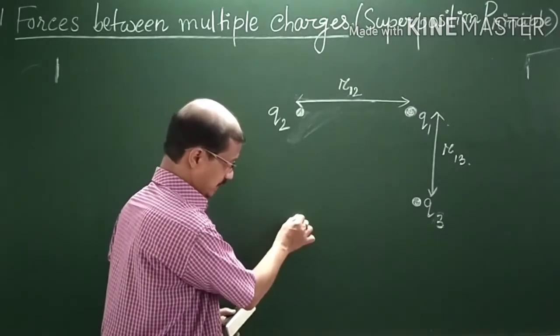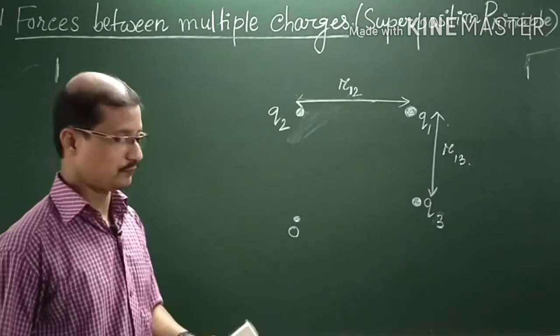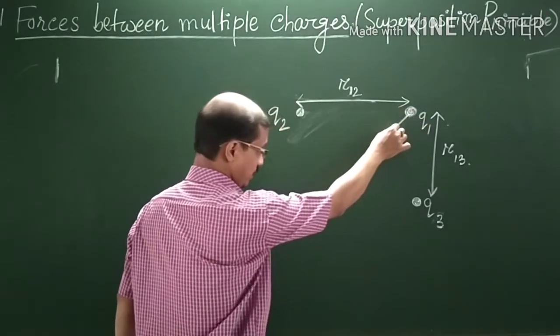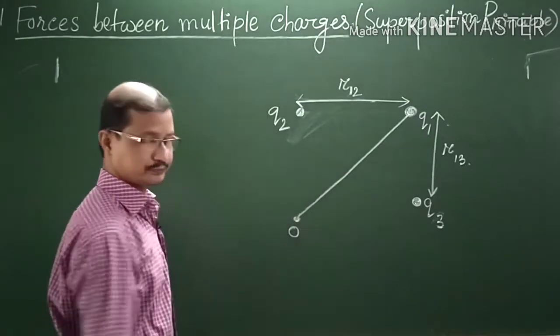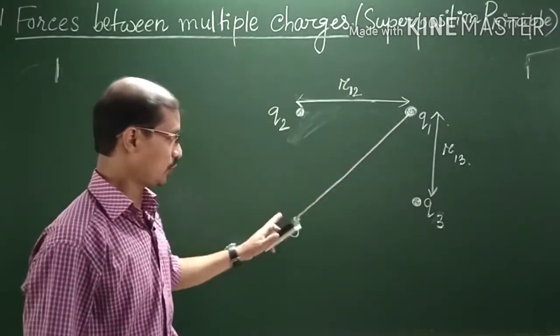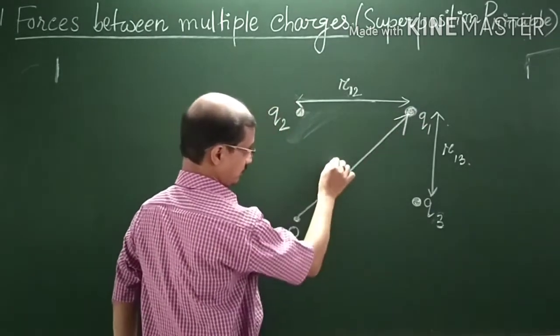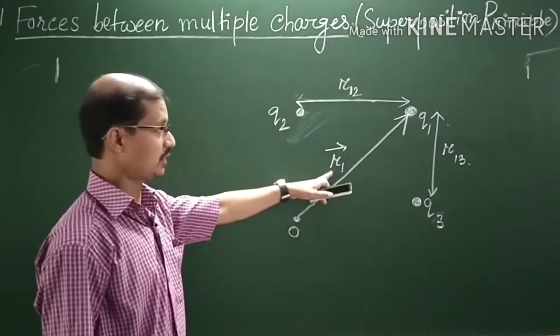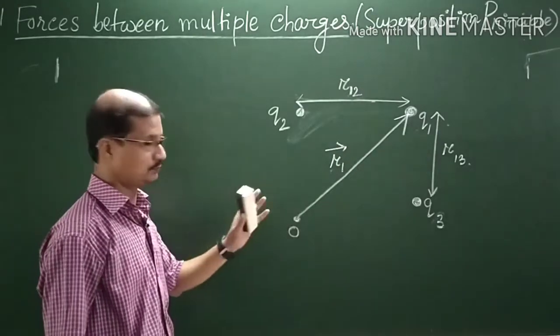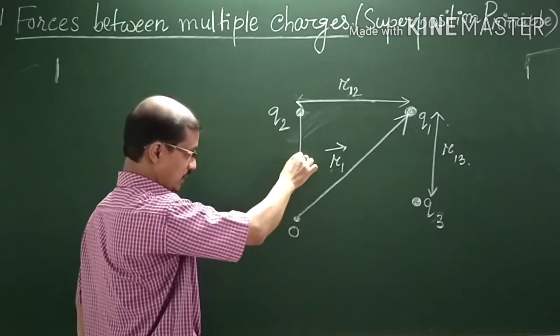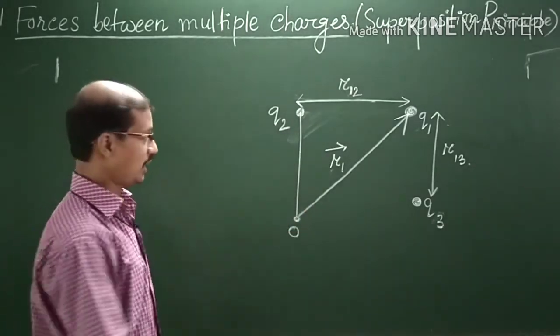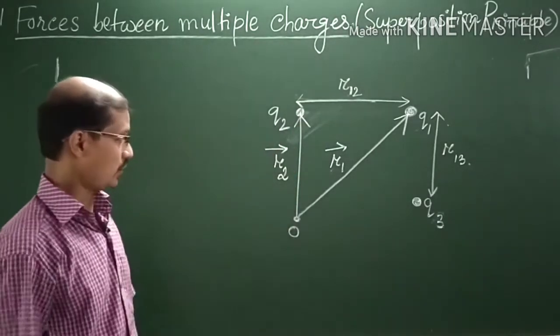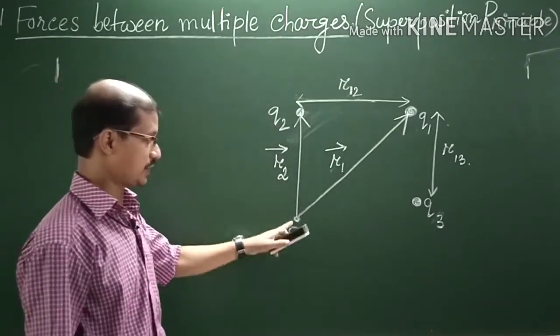Suppose O is the origin, an arbitrary origin. Now you connect Q1 with the point O. This vector is R1 vector. R1 vector is the position vector of Q1 with respect to O. If you connect Q2 to O, this vector can be considered as R2.